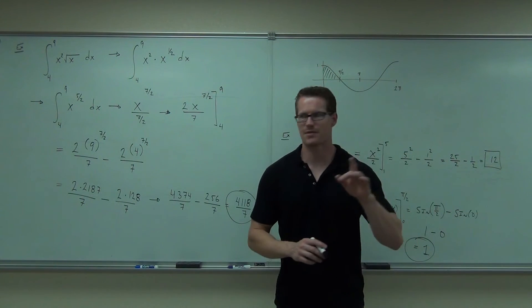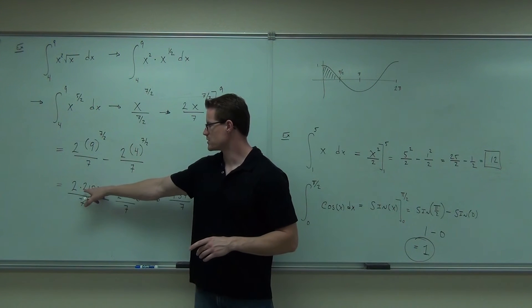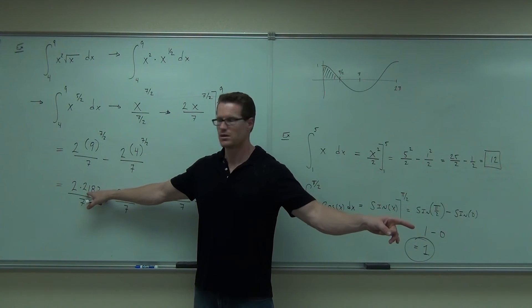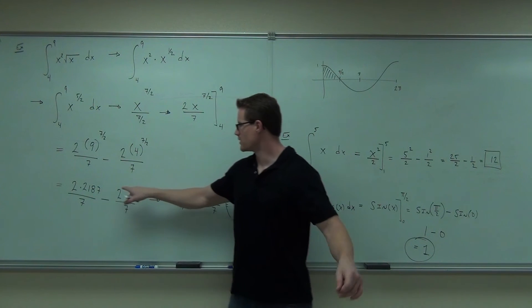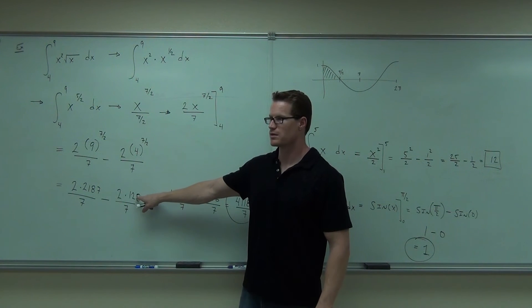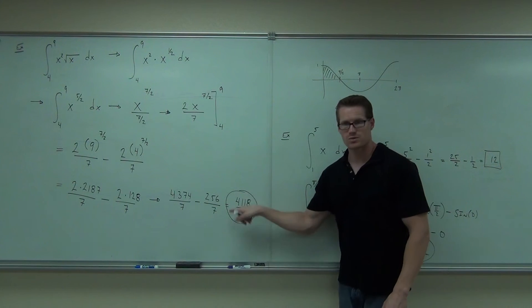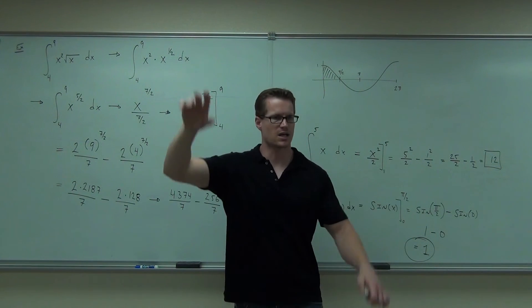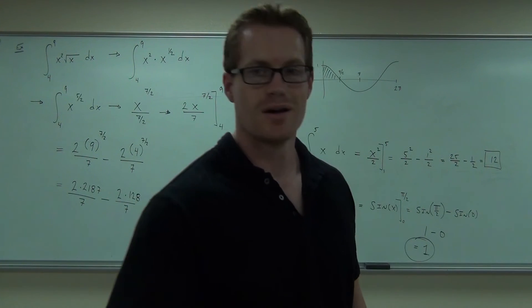Let's make sure before we end this that our math is correct. Can I get a double check on 2187? Yeah, you got that as well. Can I get a double check on the 128? Same thing here as well. How many people get what we talked about so far? Awesome. We'll try a couple more examples. We're almost done with our definite integrals.